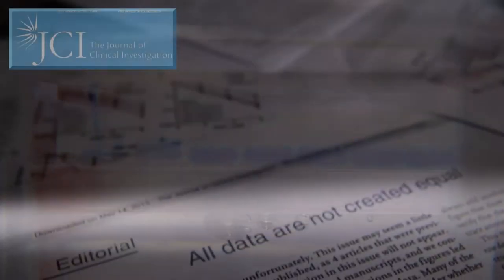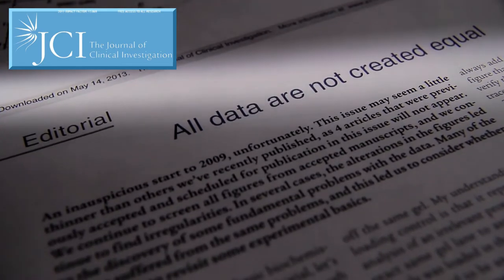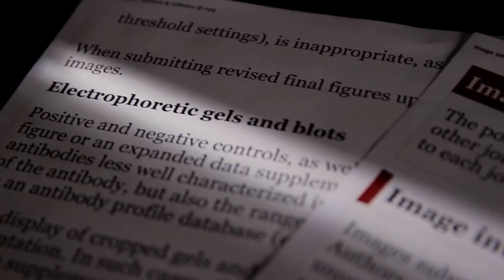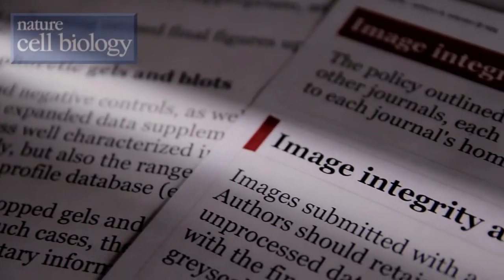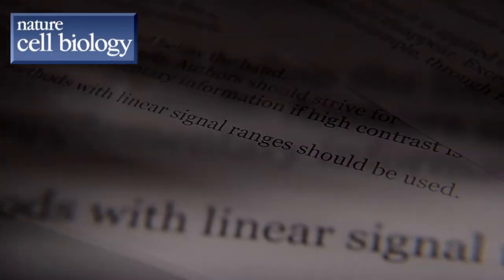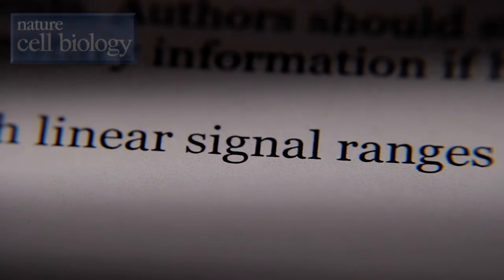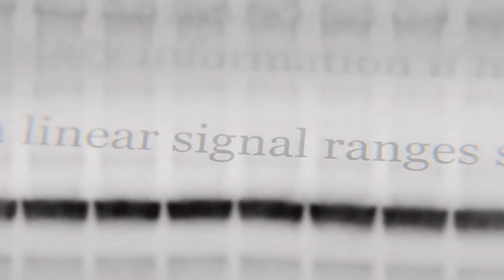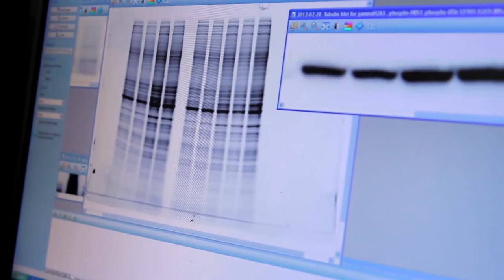The downside of doing that, and you see this over and over in the literature, is they usually blow out the signal from the actin and the tubulin so that it's not in the linear range of detection of the instrument. What you usually see are these huge fat bands of actin and tubulin all along the bottom of the western blot image.